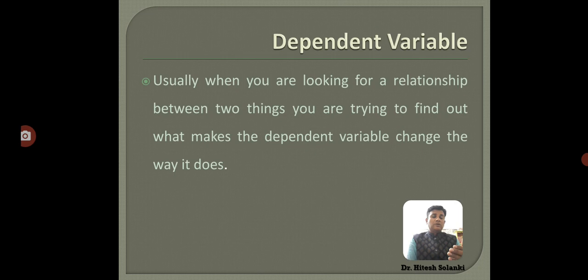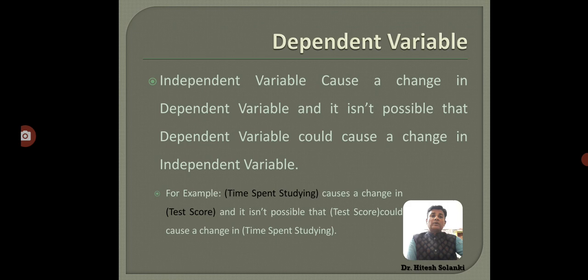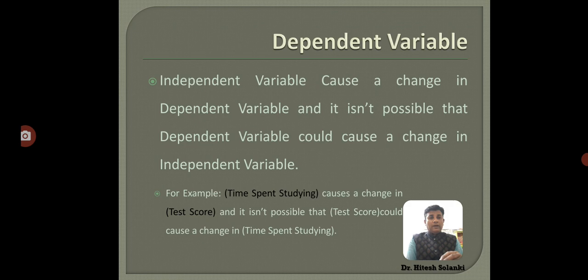Usually when you are looking for a relationship between two things, you are trying to find out what makes the dependent variable change the way it does. An independent variable causes a change in the dependent variable, and it isn't possible that the dependent variable could cause a change in the independent variable. For example, time spent studying causes a change in test score, but it isn't possible that a test score could cause a change in time spent studying.